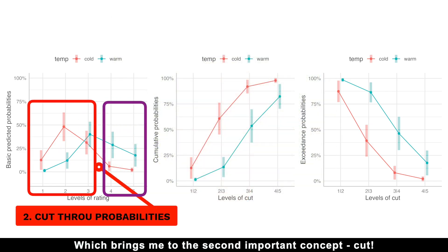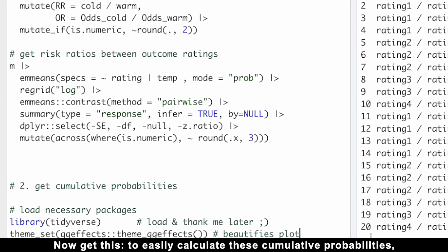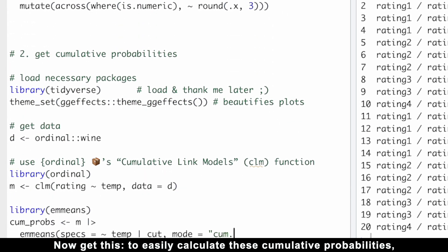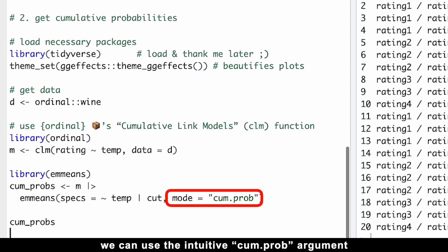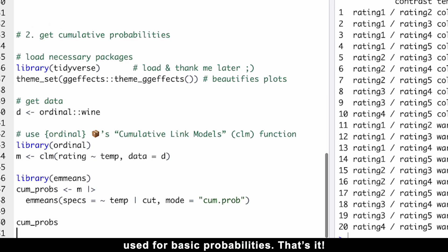Which brings me to the second important concept: Cut. Now get this. To easily calculate these cumulative probabilities, we can use the intuitive cum-prop argument in the emmeans function instead of the prop argument used for basic probabilities. That's it.